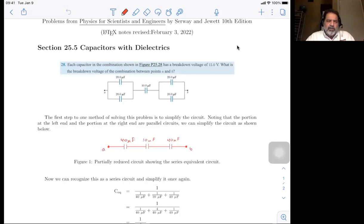Chapter 25, problem 28. This comes from section 25.5. It has nothing to do with dielectrics, but it's in that section. Each capacitor in the combination shown in figure 25.28 has a breakdown voltage of 15 volts. What is the breakdown voltage of the combination between the points at A and B?